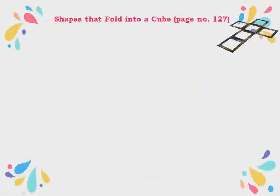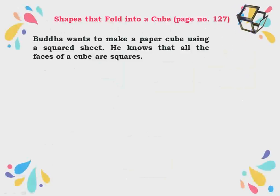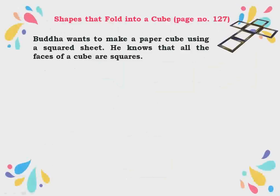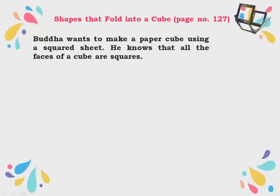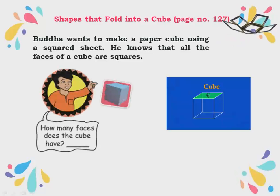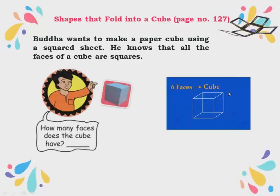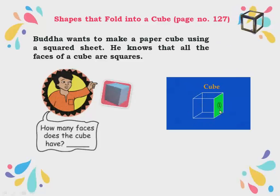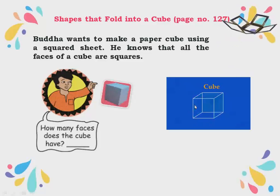Shapes that fold into a cube, page number 127. Buddha wants to make a paper cube using a squared sheet. He knows that all the faces of a cube are squares, meaning all faces are the same. A cube has six faces — I will show you. One is the first face, second face, exactly opposite is the third face, and opposite to that is the fourth face.